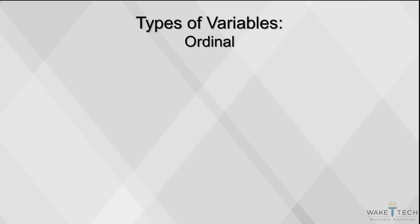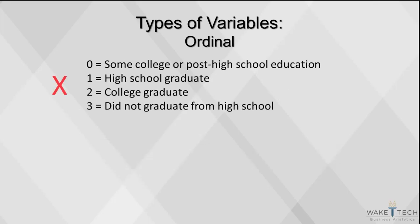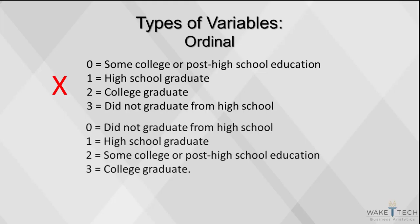Here's an example of what not to do: 0 equals some college or post-high school education, 1 equals high school graduate, 2 equals college graduate, and 3 equals did not graduate from high school. Can you tell what's wrong with this example? The data we're trying to code has an inherent order, but the coding in this example does not follow that order. Here's the correct way to do it.